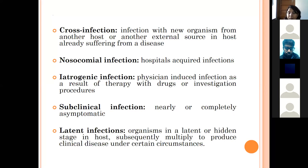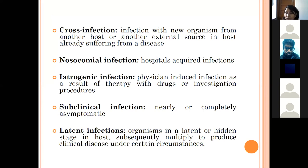Infections introduced into the host by a physician as a result of therapy or an investigative procedure are known as iatrogenic infections. In subclinical infections, the host harbors the infectious agent but does not show symptoms of the disease. In latent infections, infectious agents are present in the host in a hidden or latent form, and under certain circumstances — such as lowered immunity or stress — they multiply, produce disease, and symptoms become visible.